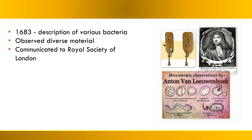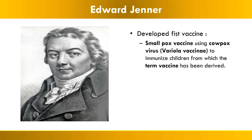In 1683, Leeuwenhoek provided descriptions of various bacteria seen through his microscope. He observed diverse material, including WBCs, red blood cells, sperm cells, as well as other bacteria, and he communicated these findings to the Royal Society of London.